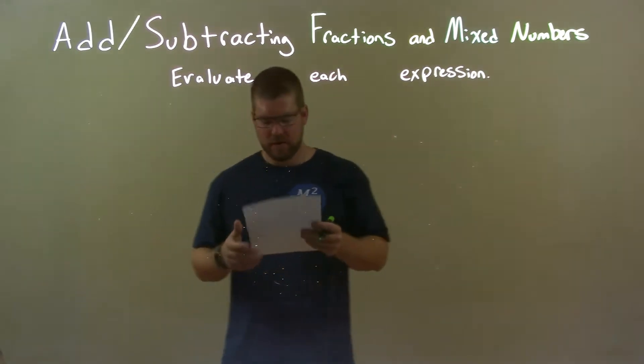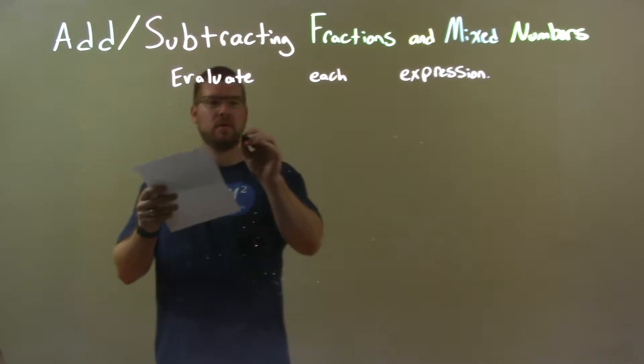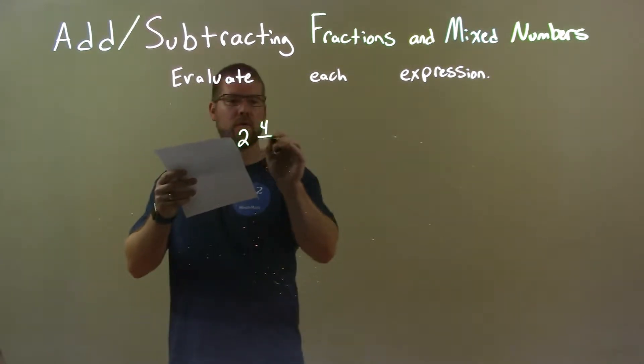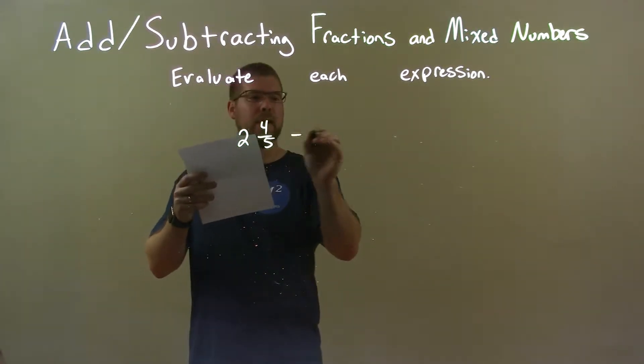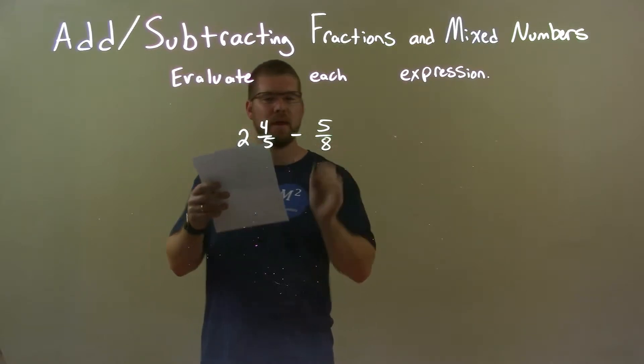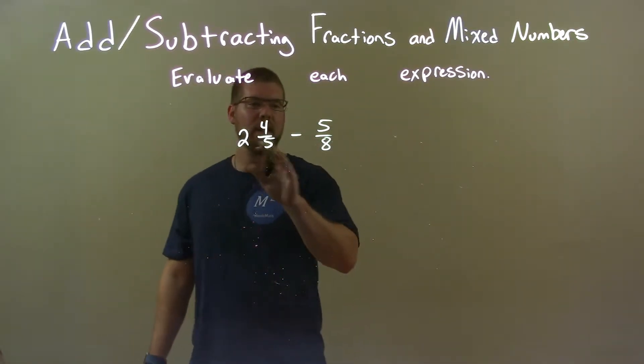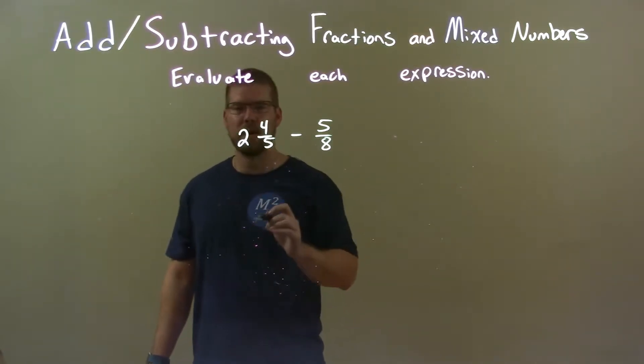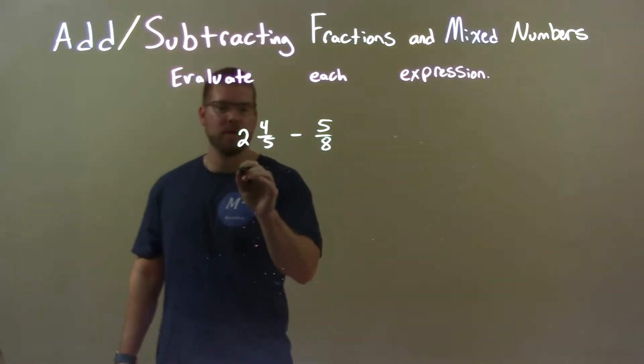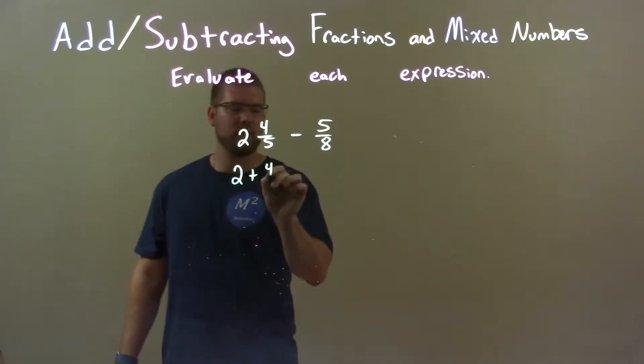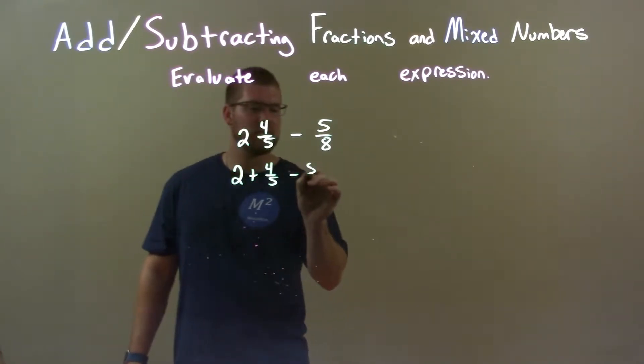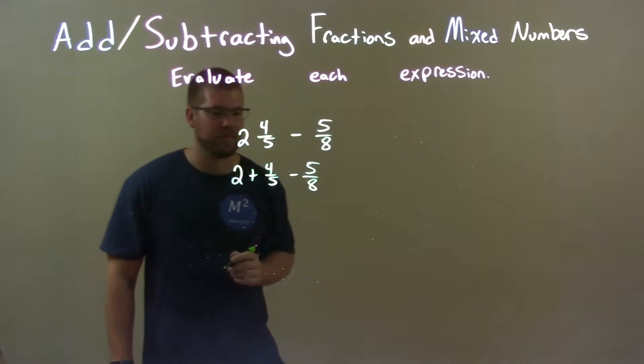So if I was given these numbers, 2 and 4/5 minus 5/8, the first thing I want to do when I subtract them is break this mixed fraction to be a whole number and a proper fraction. So you have 2 plus 4/5 minus 5/8.